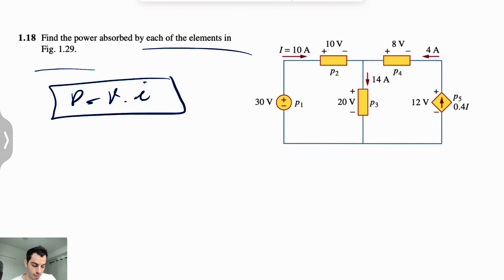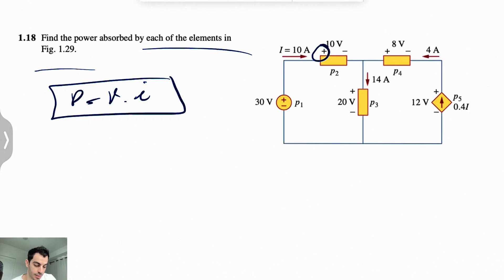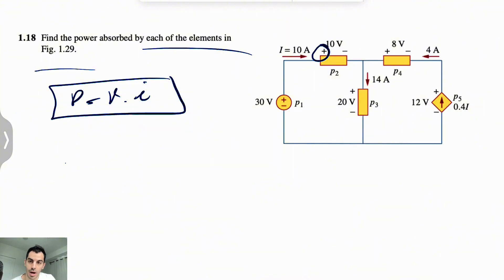Keeping in mind that we have a passive sign convention for finding the power — that's when the current enters the positive pole of each of these elements, which gives us positive power, meaning the power is actually absorbed. And when the current enters the negative pole of each of these elements, the power is going to be negative, meaning the power is actually supplied.